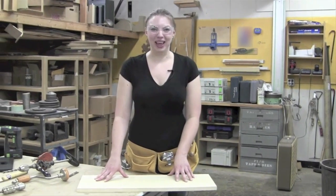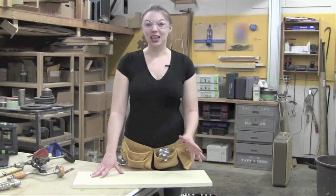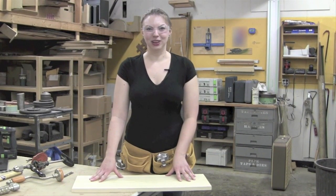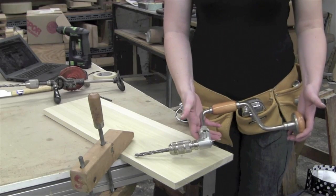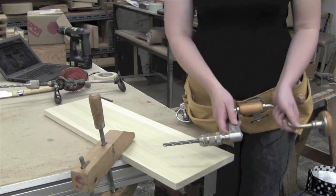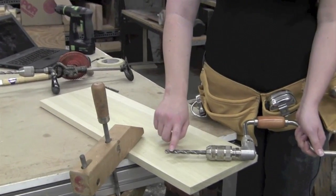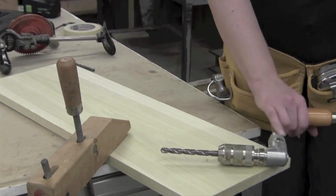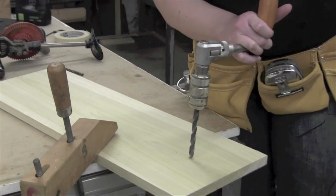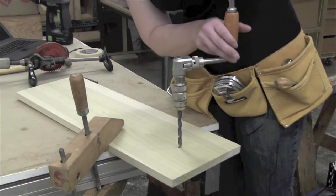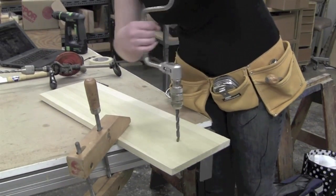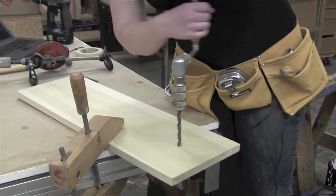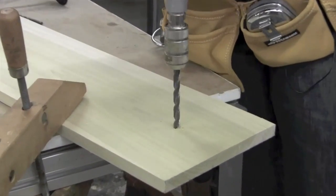Carpenters used to do everything by hand. Say we want to drill a hole in the middle of the flower — how would you drill a hole by hand? This is a tool called the brace and bit. The drill bit has sharp edges that allow it to drill into the wood. You position the drill bit where you'd like to make the hole, apply pressure, and then by hand you rotate the drill bit to drill into the wood.